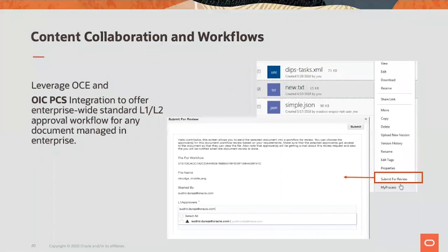Once you're working in a document-centric or collaborative way with different employees, another common use case is a tiered workflow for certain approvals — whether within your management chain or other groups. We've leveraged the integration capabilities between OCE and Process Cloud Service, which is part of Oracle Integration Cloud, so that for any piece of content, any employee can start a workflow process. We call it a typical L1/L2 two-level approval process, without any specific development or IT intervention, making it more self-service.